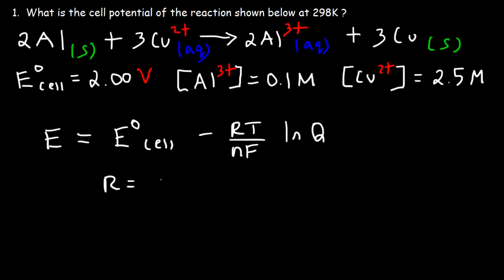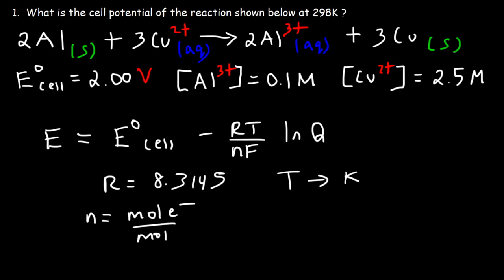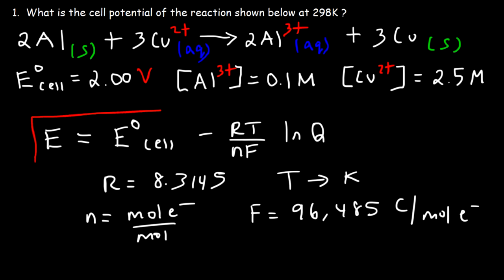R is the energy constant, which is 8.3145. T is the temperature in Kelvin. N is the number of electrons in the balanced half reactions — the ratio between the moles of electrons per mole of substance. F is Faraday's constant, 96,485 coulombs per mole of electrons. You need to use this equation if the temperature is not at 25 degrees Celsius or 298 Kelvin.